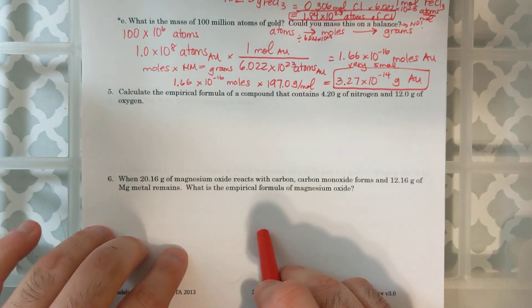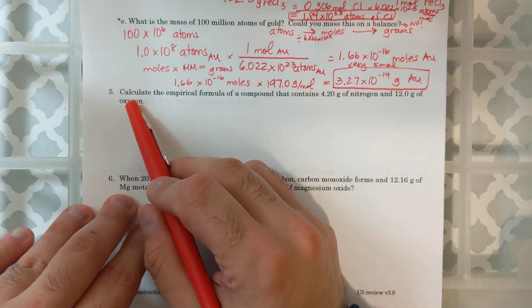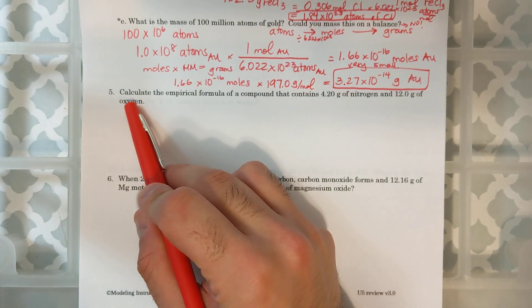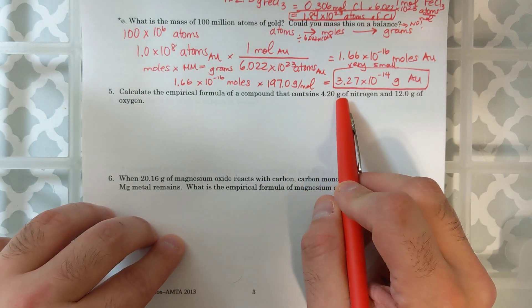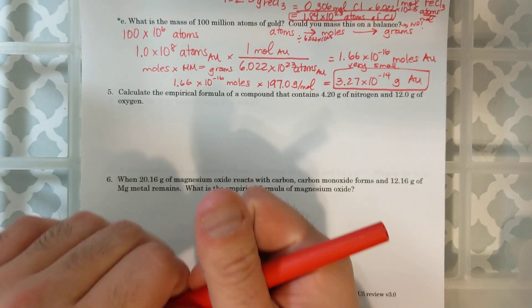Now we're going to start talking about empirical formulas. Let's look at question 5. It says, calculate the empirical formula of a compound that contains 4.20 grams of nitrogen and 12 grams of oxygen.